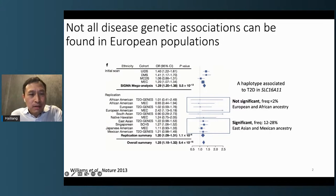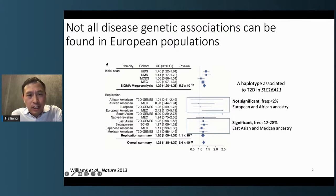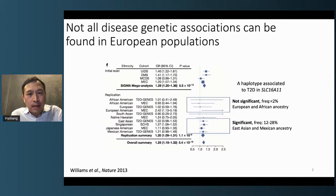Here's my favorite example. In a study in 2013, a haplotype of five SNPs in the gene SLC39A11 was reported to be associated with type 2 diabetes. But this association was only observed in the East Asian and Mexican population, not in the European and African population. The reason for this is not because the biology is different — it's simply because this haplotype is more frequent in the East Asian and Mexican populations: 12% for East Asian and 28% for Mexican, versus less than 2% in European and African populations. If we had not done this analysis outside of the European population, we wouldn't have known about this association.